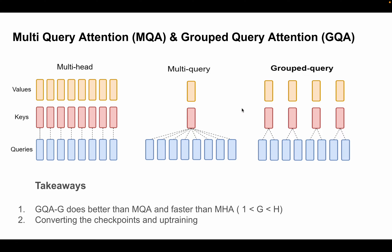The terminology used is GQA followed by the number of groups — for example, GQA4 means four keys and values. As long as g is greater than one and less than h, GQA performs better than multi-query attention and is faster than multi-head attention. One key aspect explained in the paper, which I found interesting, is the concept of up-training. The challenge is primarily on the inference side rather than the training side.